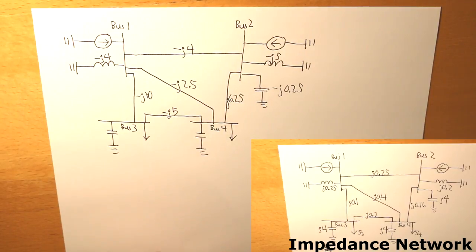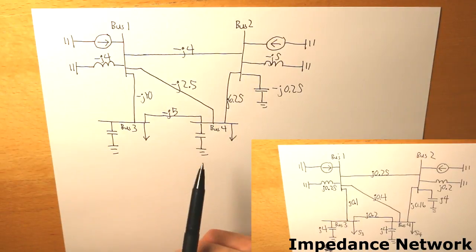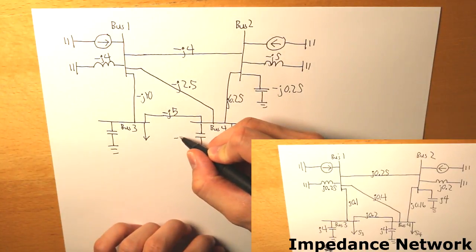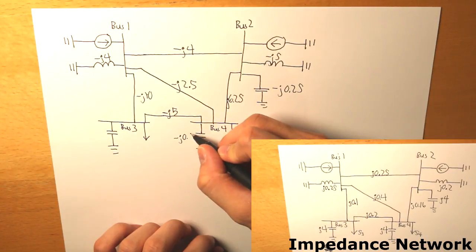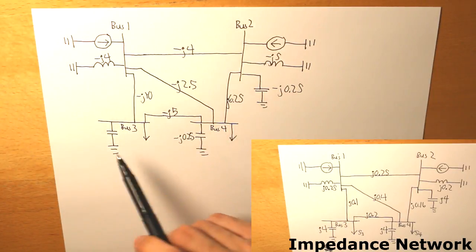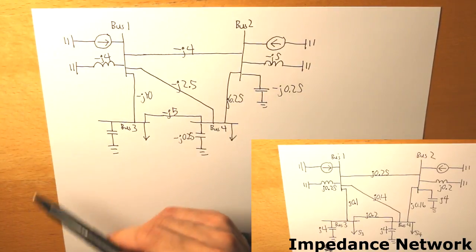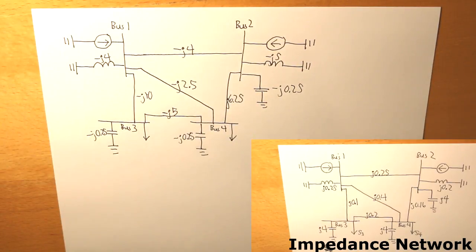The capacitance connected to this bus had an impedance of j4, so the admittance is negative j0.025. For the other capacitance at bus 3, which used to be j4, the admittance is again negative j0.25. Now we have all our admittance values for each component.